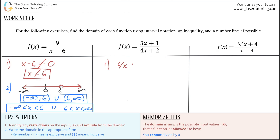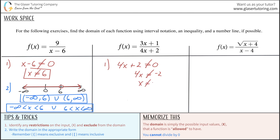So we write that 4x plus 2, which is the entire denominator, cannot equal zero. Now just go to work — treat this as if it were an equal sign. Subtract 2 from both sides: 4x is not equal to negative 2. Then divide both sides by 4, so x cannot equal negative one-half. That's your restriction.